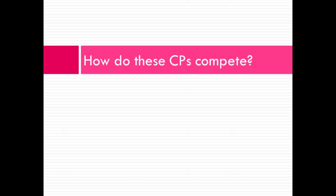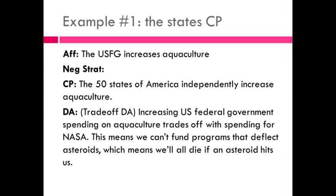So how do counter plans compete? Let's go through some examples. First is the states counter plan. The affirmative is that the US federal government increases aquaculture. The counter plan is that the 50 states, each independently, will increase aquaculture. The disadvantage functioning as the net benefit is that increasing US federal government spending on aquaculture trades off with spending on NASA, meaning we can't fund programs to deflect asteroids. This is the same trade-off DA we've discussed, but now we see how the counter plan won't link to that DA while the affirmative will.